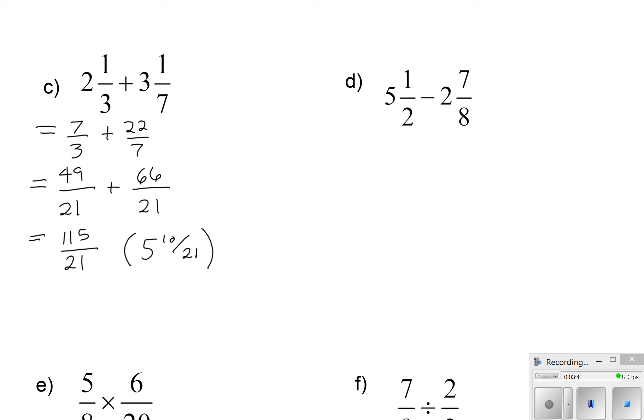So the second, or part D, we're going to do the same thing. We're going to change them to improper first. 5 times 2 is 10, 10 plus 1 is 11. 2 times 8 is 16, 16 plus 7 is 23. In this case, the lowest common denominator is 8. So that means the second fraction doesn't change. To get 8, we did 2 times 4. So we're going to do 11 times 4. And then we're going to subtract, and we're going to get 21 over 8.